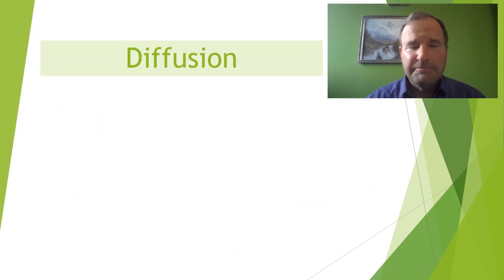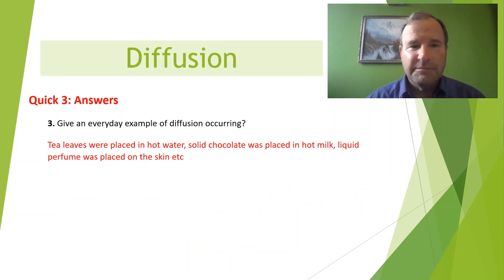Number of answers here. Question three. Give an everyday example of diffusion occurring. So any one of these or any one that's similar or to other effect. Tea leaves placed in hot water. Example of diffusion. The tea leaf dissolves. The hot water causes that and moves from concentrated tea leaves in and around the water. Solid chocolate was placed in hot milk.